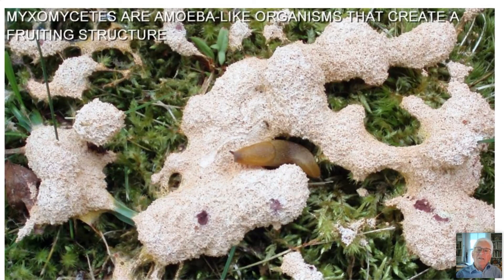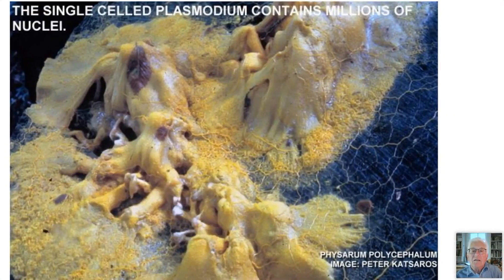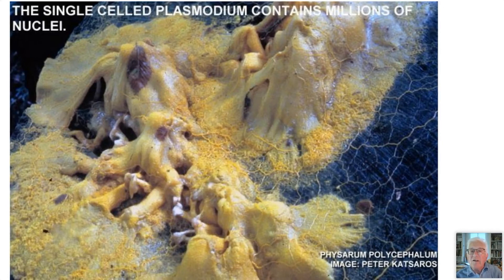On to spring. This is a slime mold — it's just crawled out of its substrate like a slug and made this structure. This is all one cell. It's Physarum polycephalum. Here you can see the streaming plasmodium coming up, encompassing this whole area, becoming a single-celled organism containing millions of nuclei. Here's a better shot of it — the organism has come out of the log and is streaming towards fruition, and it fruits to look like this: many heads — polycephalum.